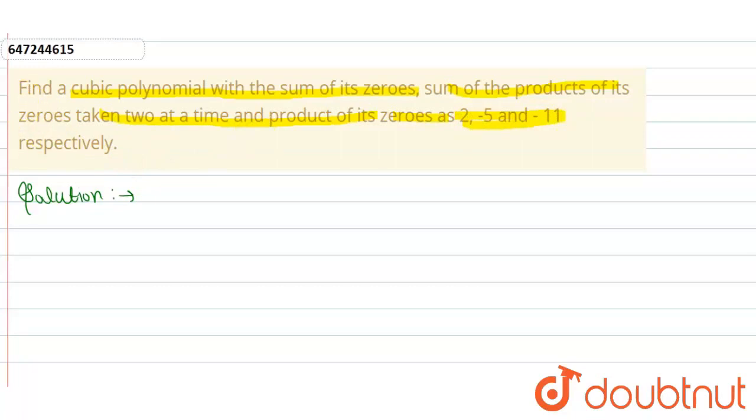I have to write a cubic polynomial. Let's start the solution. First, let alpha, beta, gamma be the zeros of the cubic polynomial. We're given the values of the zeros—that is alpha, beta, and gamma.